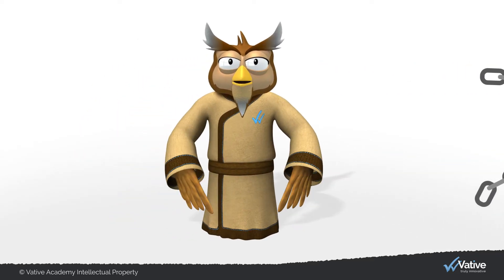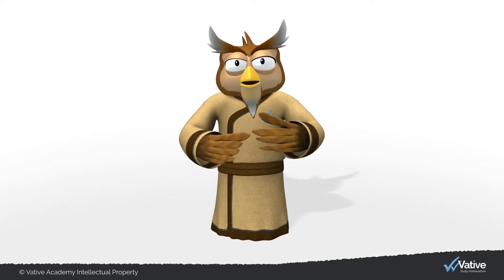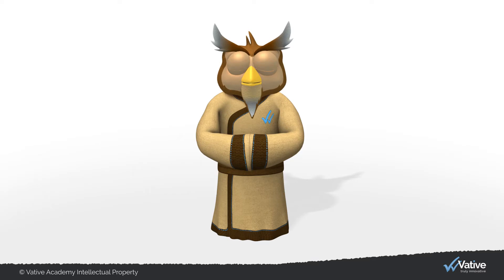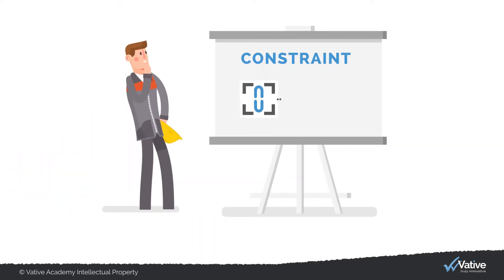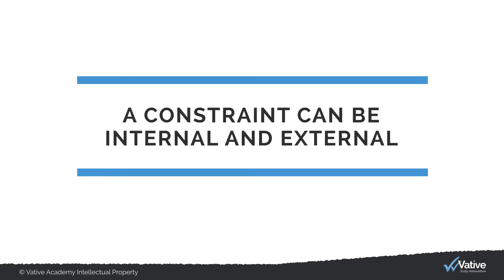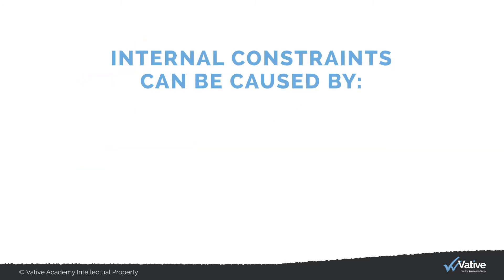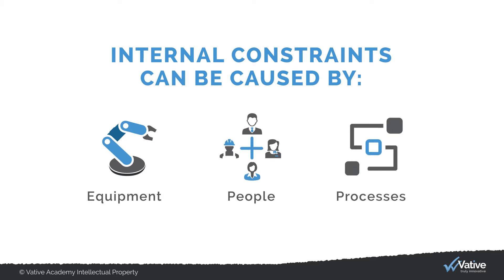So what are constraints and how can they be eliminated? A constraint is anything that prevents the system from achieving its goals. Constraints can be internal and external. Internal constraints can be caused by equipment, such as the lack of capacity and availability; people, such as the lack of workload balance and skills; or processes, often caused by a lack of standardisation or information.